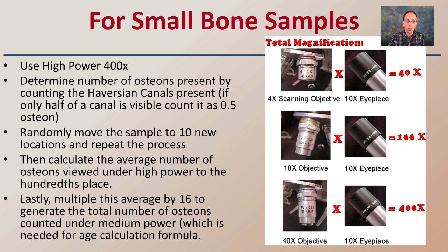Move the sample to 10 new locations and repeat the process to gather your data. Calculate the average number of osteons viewed under high power to the hundredth place. Lastly, multiply the average by 16 to generate the total number of osteons counted under medium power, which is needed for the age calculation formula. So use high power, take more samples, and multiply by a factor of 16.